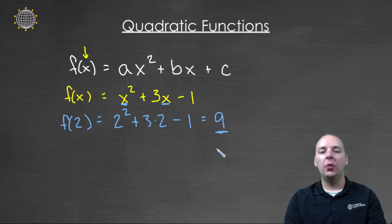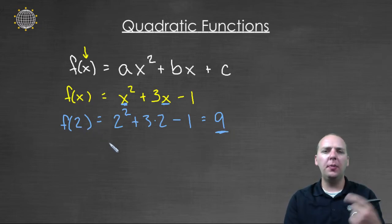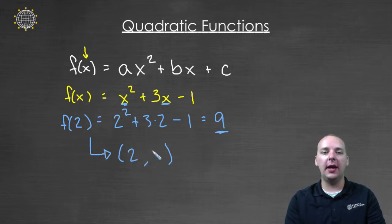Now what is nine? Well nine was the output from plugging two in for x. And if you remember, this is actually very similar to what we talked about when we studied linear functions. This gives us basically an x, y ordered pair that's on the graph of this function. So we plugged in a two for x and we got out a nine for y. So this is like an x, y ordered pair that's on the graph of this particular quadratic function.